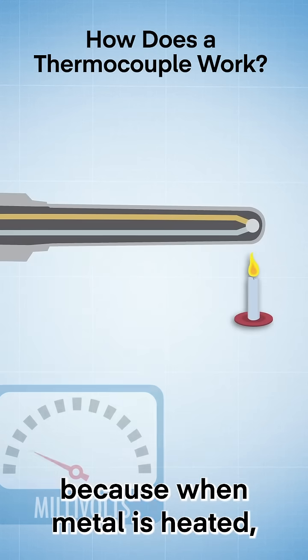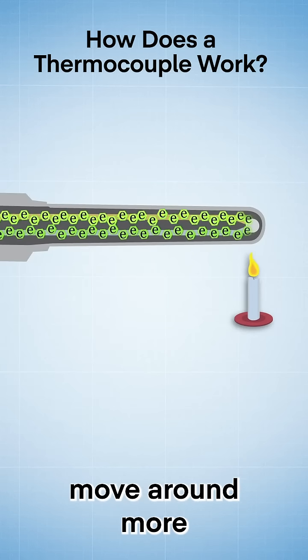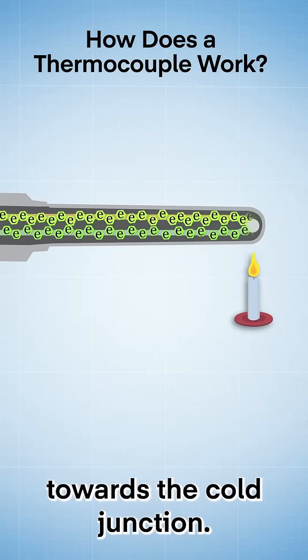This occurs because when metal is heated, the electrons in the metal move around more and tend to move away from the heat source towards the cold junction.